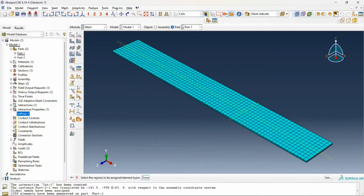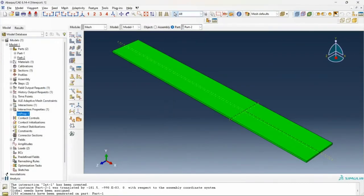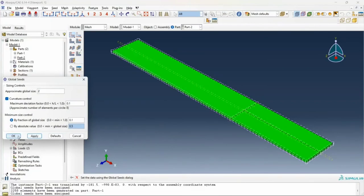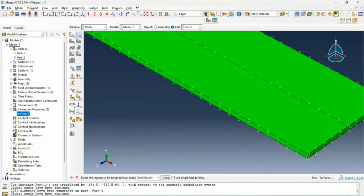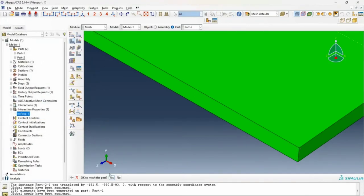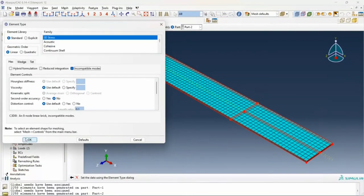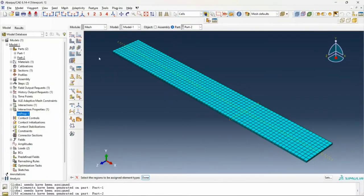I also need to take care that my element type is appropriate. I'll select this region to assign my element type and assign an element of type C3D8I, and click OK. Now I repeat the exact same steps that I did for part one for part two as well. I assign an edge length and mesh, and I assign an element type.